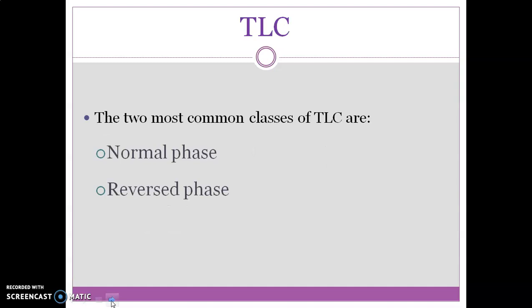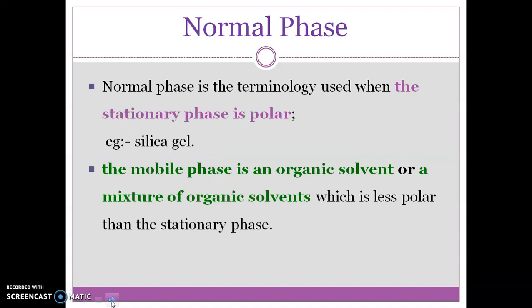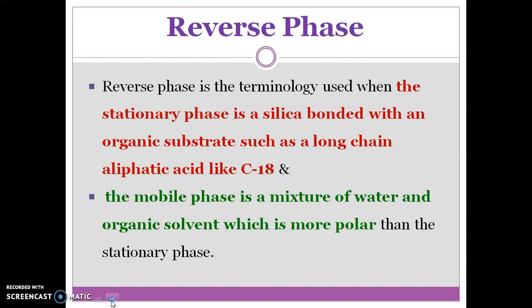There are two most important classes of TLC. First is normal phase TLC and second is reverse phase TLC. In normal phase TLC, the stationary phase is polar — for example, silica gel. The mobile phase is an organic solvent or mixture of organic solvents which is less polar than the stationary phase. Whereas, in reverse phase, the stationary phase is silica bonded with an organic substrate such as long chain aliphatic acids like C18. And the mobile phase is a mixture of water and organic solvent which is more polar than the stationary phase.